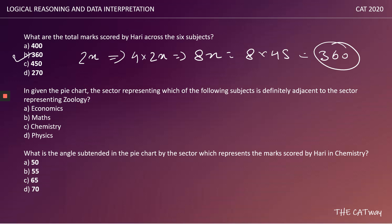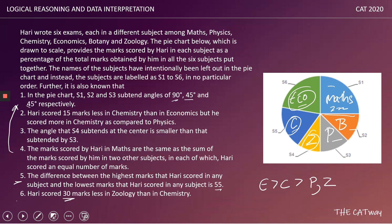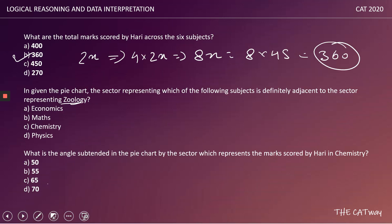Question 2: In the pie chart, the sector representing which subject is definitely adjacent to the sector representing zoology? Zoology is represented by S4. The adjacent sectors are S3 (physics or botany) and S5 (chemistry). Among the answer options — economics, maths, chemistry, and physics — chemistry is definitely adjacent. The answer is option A.